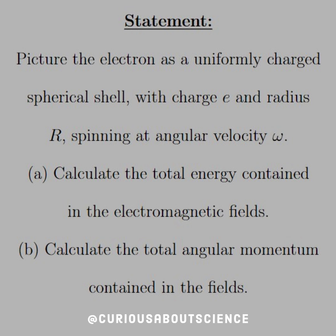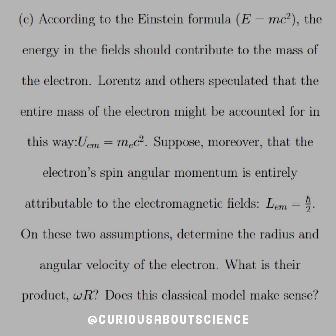Calculate the total angular momentum contained in the fields. And, according to Einstein's formula E equals mc squared, the energy in the fields should be contributed to the mass of the electron. Lorentz and others speculated that the entire mass of the electron might be accounted for in this way — U, the energy of the electromagnetic field, is equal to the mass of the electron times c squared. Suppose, moreover, that the electron's spin angular momentum is entirely attributed to the electromagnetic field, so L_EM equals h-bar over 2. On these two assumptions, determine the radius and angular velocity of the electron. What is their product, omega R? Does this classical model make sense?